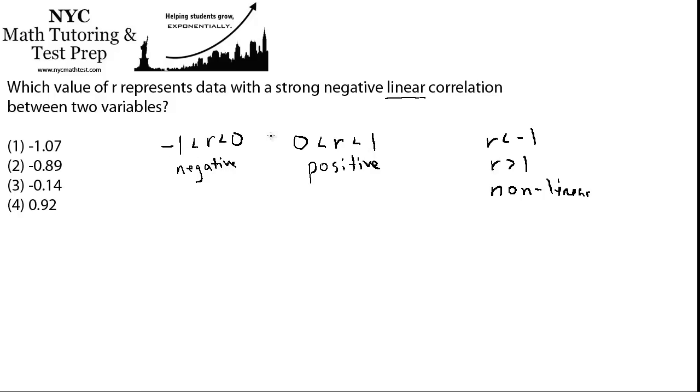If it's close to zero, if it's in between, if the R value equals zero, then we would say they're not correlated at all, that there's a weak correlation or no correlation between the variables.